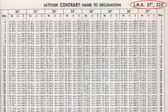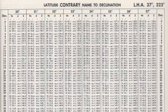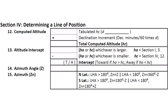Notice an LHA of 37 degrees gives the same values, which makes sense when you consider that the sum of these two values is 360 degrees. As we marked contrary in section 3, we'll use the top half of this page. We had an assumed latitude of 30 degrees, so we used this column. With a declination of 23 degrees, we see our tabulated HC is 26 degrees and 11.2 arc minutes, while our D is minus 49 arc minutes. We note these values on the sight reduction form.